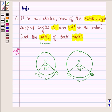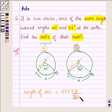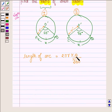So we have to find the ratio of their radii. Now let R be the radius of first circle and R' be the radius of another circle. Let this be first circle and this be second circle. Now as we know, length of arc of a circle is equal to 2 pi r times theta upon 360 degrees, where theta is the angle subtended by the arc at the center.